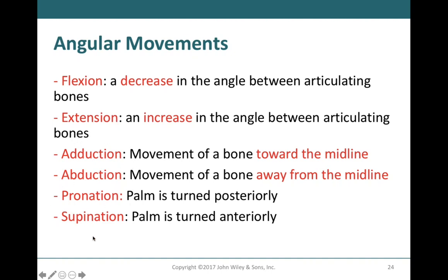Pronation and supination refer to movements of the forearm and hand. Pronation is where we turn the palm towards the backside of the body, and supination is when we turn the palms towards the front side. In the anatomical position the palms face forward — that is supination. If we bring our thumbs inward and point our palms towards the backside, that is pronation.